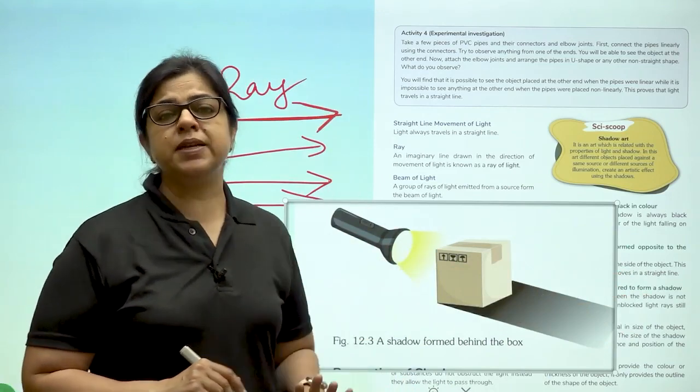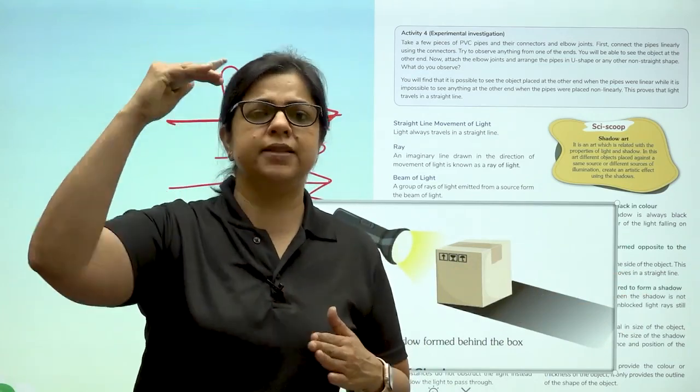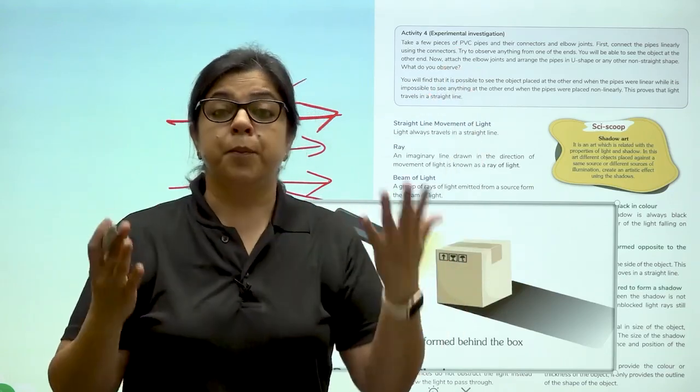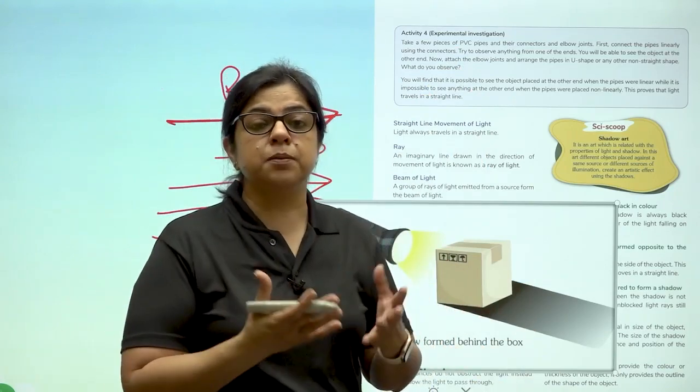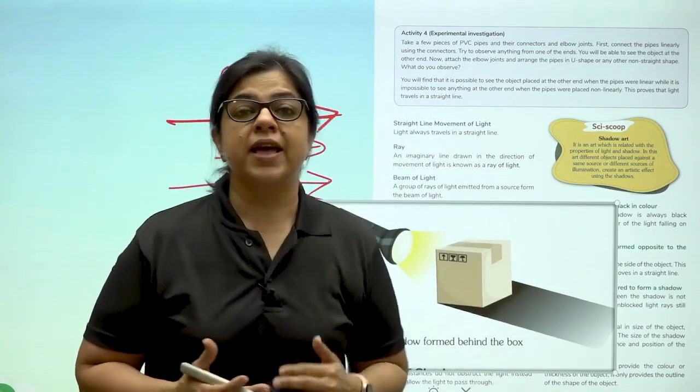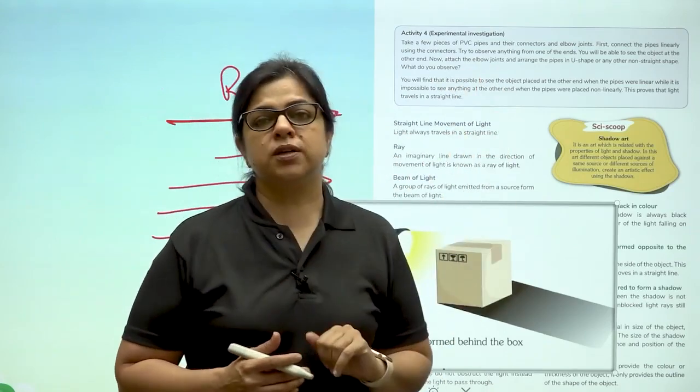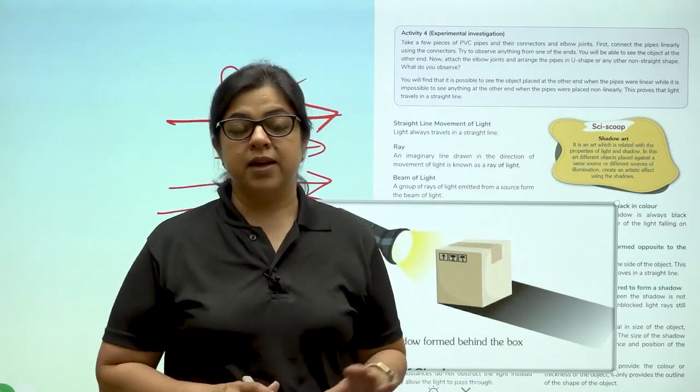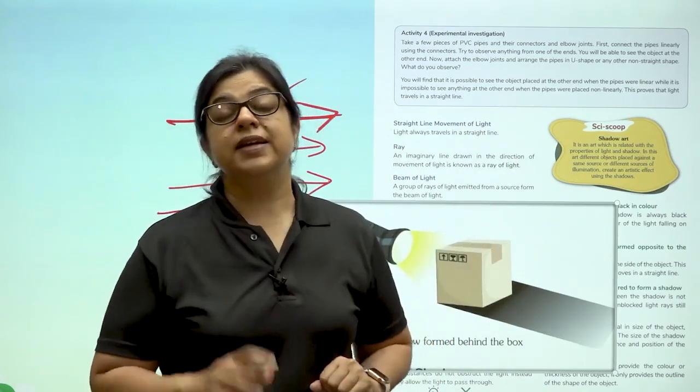To give you a simple example, if there is a bird flying very high in the sky, the light is falling on the bird. Bird is opaque, but there is no shadow of the bird because the bird is right in the middle of air. Whereas when this bird will fly closer to the ground, there will be a screen under the bird. At that moment, the bird's shadow will fall on the ground.